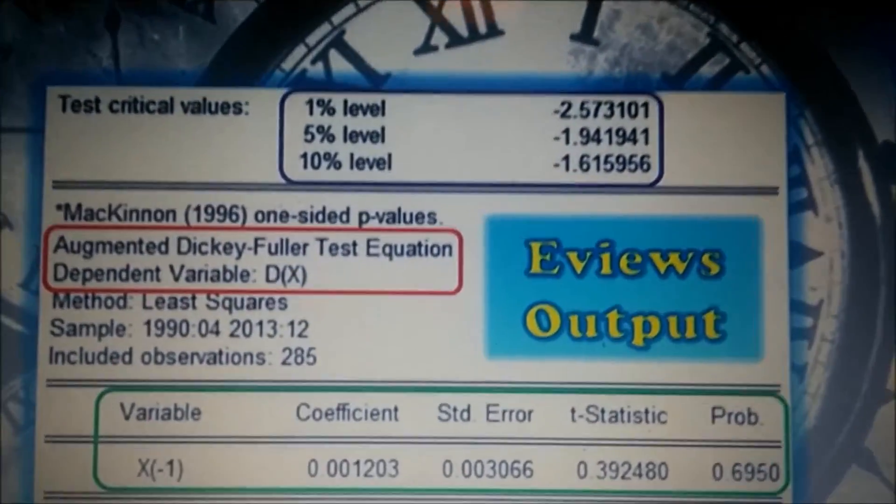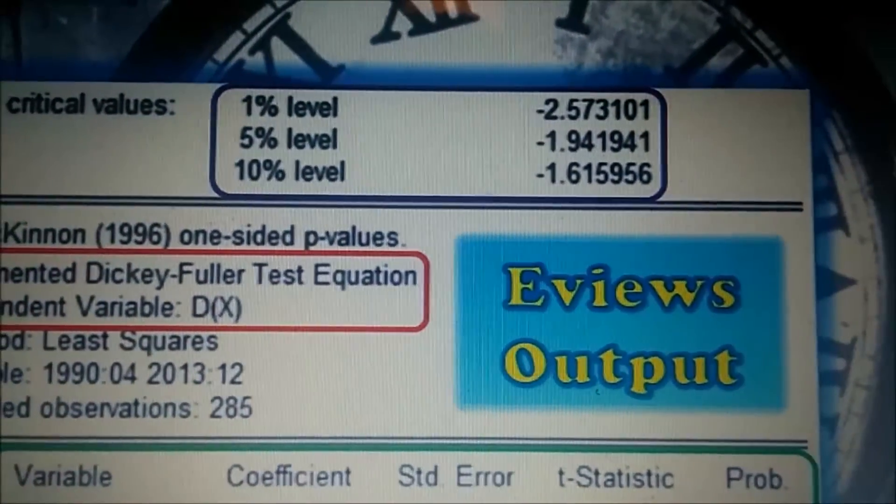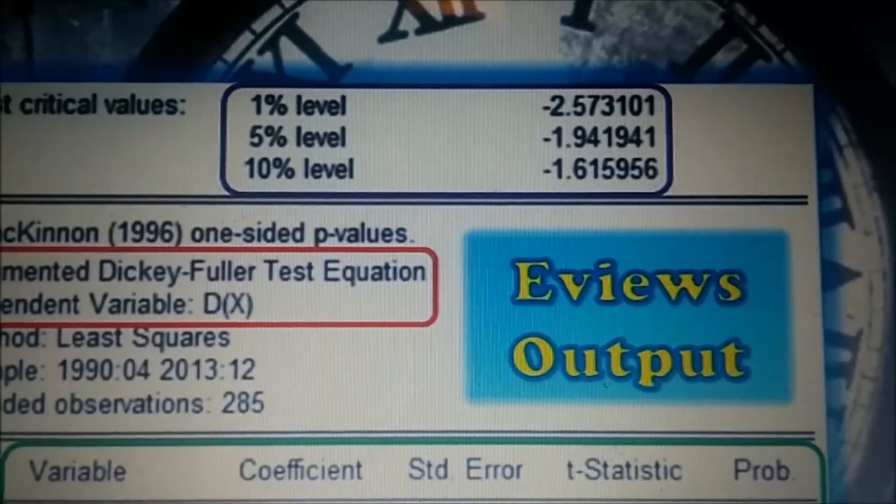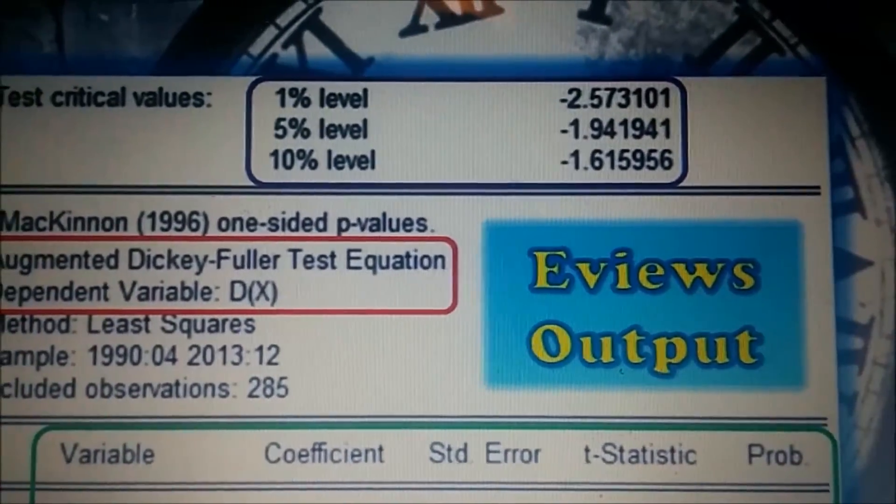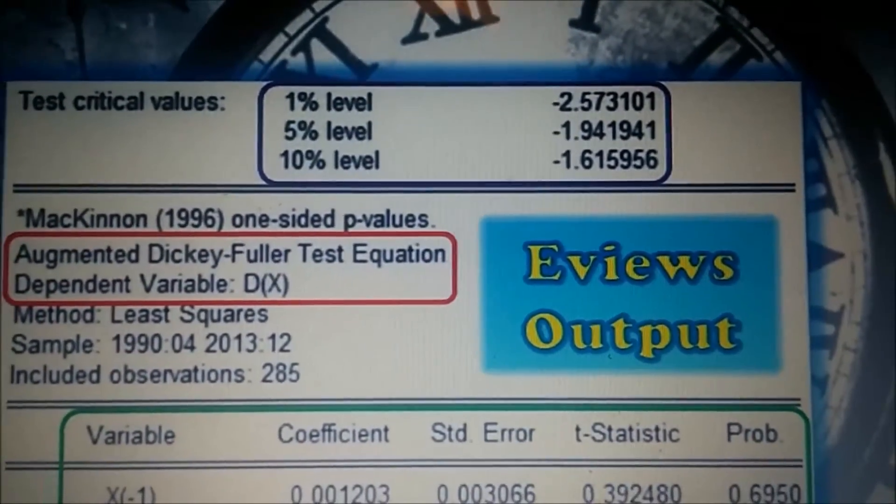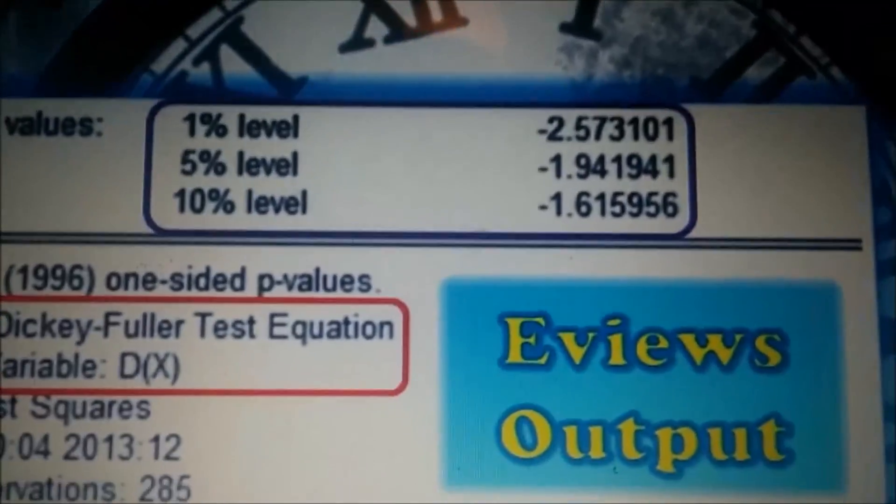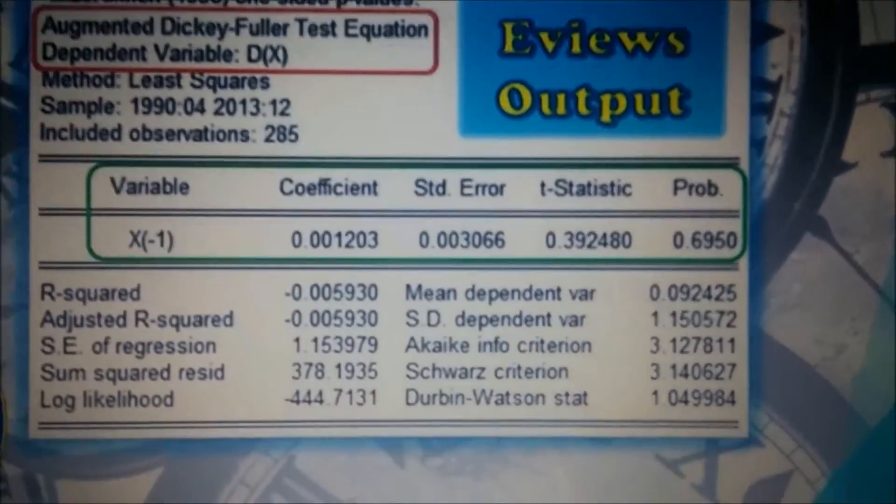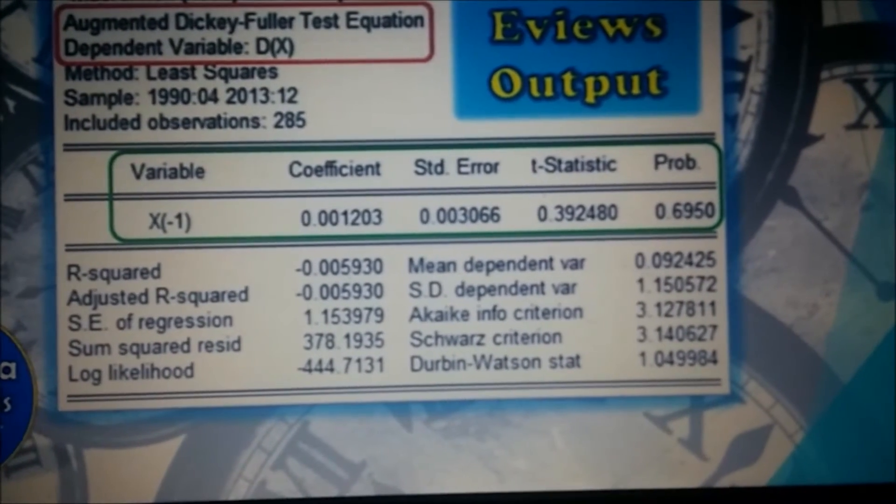More importantly, let's look at the test critical values above it. Notice that the test critical values are at 1%, 5%, and 10% levels. This isn't from the t distribution or the normal distribution. In fact this is from the Dickey-Fuller distribution. Yes, even Dickey-Fuller has his own distribution.